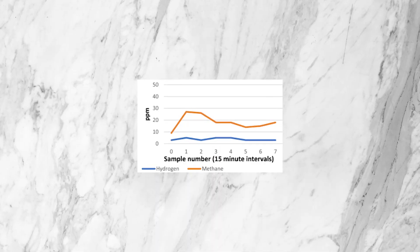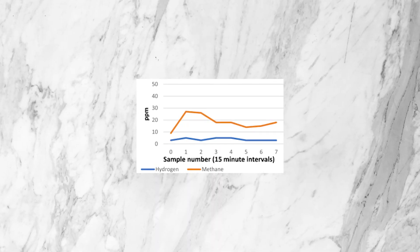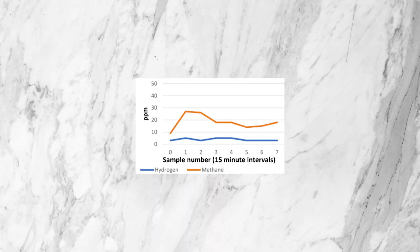This is why even if your breath test is only showing high levels of methane gas, it's still a good idea to treat the hydrogen-producing bacteria as well when doing your treatment.